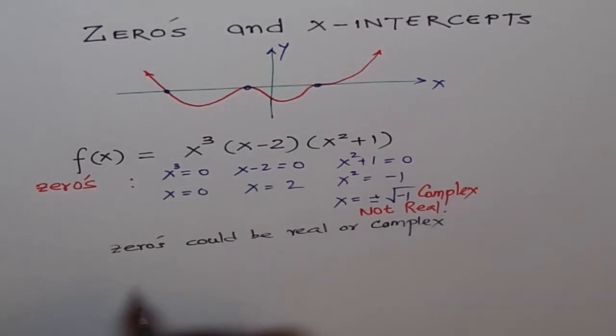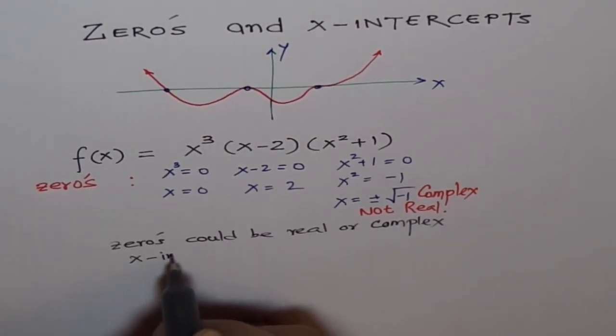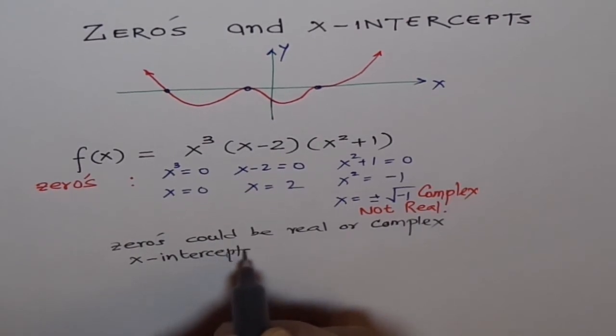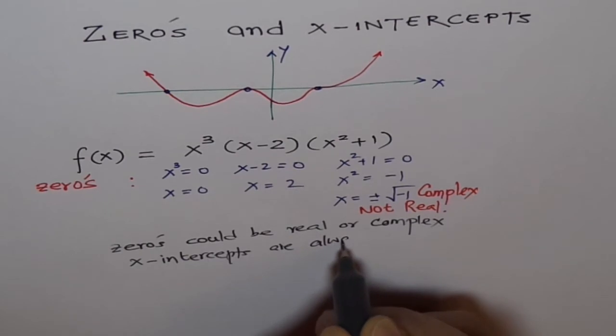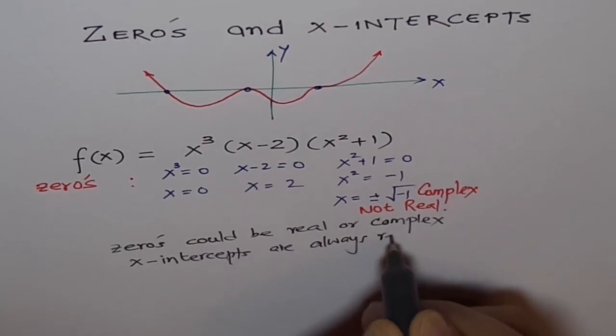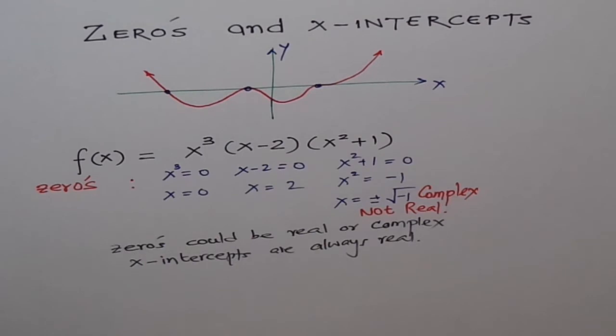But X intercepts are real, always. Let me put that word. Always real. So that's one difference.